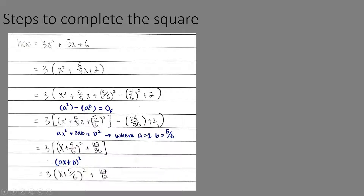You can now separate the equation into the form a squared plus 2ab plus b squared, where a equals 1 and b equals 5/6. This separates into (x + 5/6) squared minus (5/6) squared plus 2, which simplifies to (x + 5/6) squared plus 47/36. Multiplying the 3 back in gives 3(x + 5/6) squared plus 47/12.